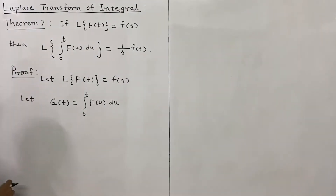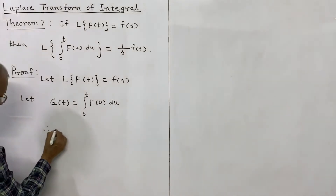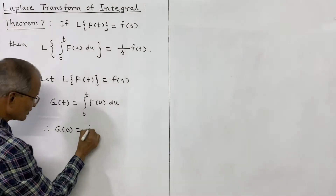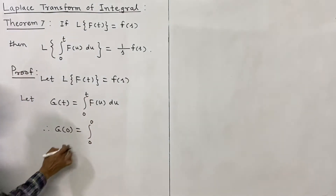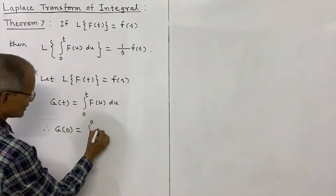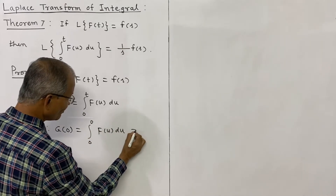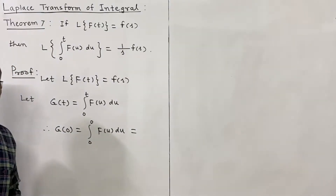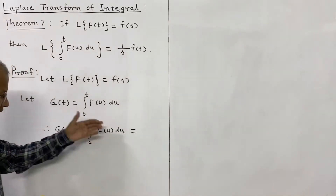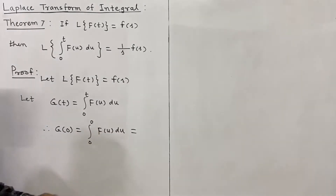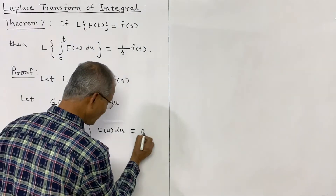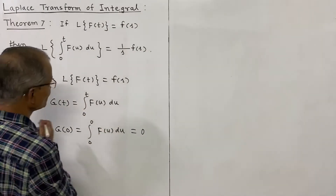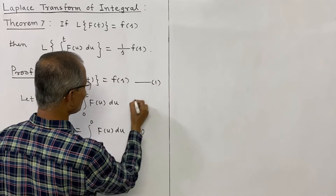We can find g(0) from this definition. For t = 0, this is the integral from 0 to 0 of F(u) du. We know that whenever the lower limit and upper limit are equal, the integral value is 0, because after evaluation we substitute the upper and lower limits and subtract them. So g(0) = 0.